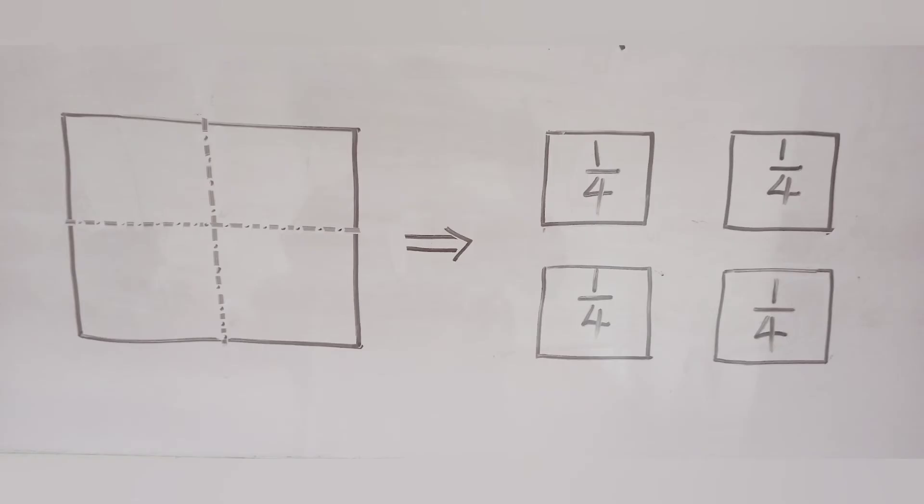The paper is divided into 4 equal parts and each of the small parts is called one quarter of the paper. One quarter is written as 1 over 4.